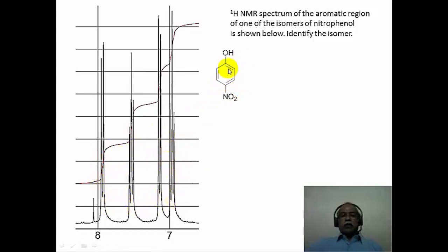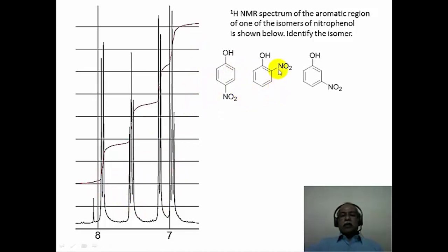This is not a symmetrical spectrum with respect to any center of the spectrum, so one can straight away rule out that possibility. That leaves us with 2 other isomers, namely ortho-nitrophenol and meta-nitrophenol.